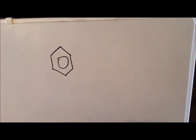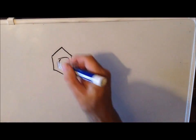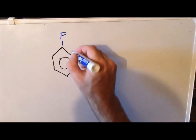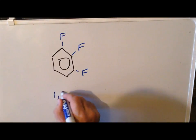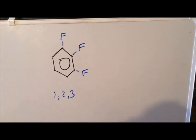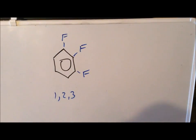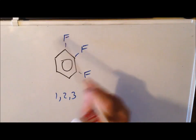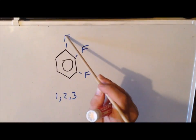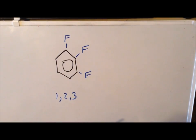We can now progress to trisubstituted benzene derivatives. One of the first we might look at is 1,2,3-trifluorobenzene, and we're interested in the point group assignment for this particular molecule. If I try with benzene to see what rotations we have in the plane of the board, I see that if I do a C6, C3, or C2, this fluorine will go to a hydrogen, which tells us that we don't have a C6, a C3, or a C2 in that particular plane.